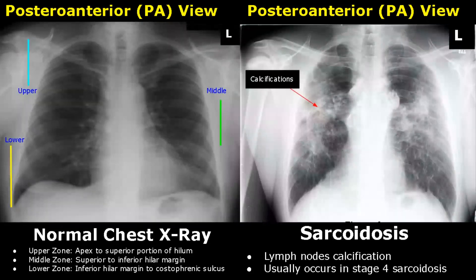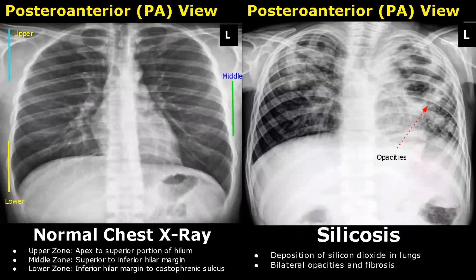Lymph node calcification may also occur in some cases of sarcoidosis, usually in stage 4. Silicosis occurs when there is deposition of silicon dioxide particles within the lungs — mine workers and tunnelers usually suffer from silicosis. On x-ray, we will see bilateral opacities and areas of fibrosis.